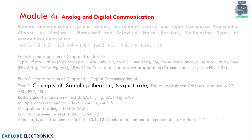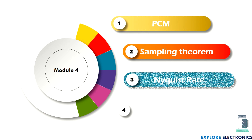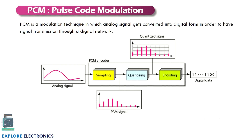Hello everyone, welcome to this video. In this video let us discuss sampling theorem, Nyquist rate and aliasing. In the previous video we have seen PCM, that is pulse code modulation. Pulse code modulation is a modulation technique which takes the analog signal as input and converts it into a digital form, so we are going to get digital data finally.